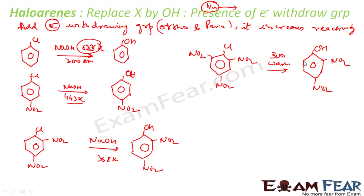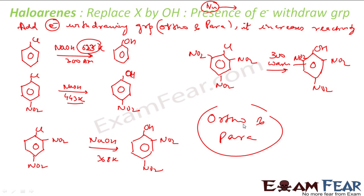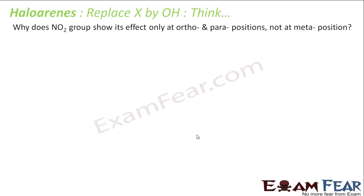Now you have seen that we added the nitro group only at ortho and para positions. As I told, the electron withdrawing group withdraws electrons, making the ring less electron rich so the nucleophile can attack. But the question is: why did we add only at ortho and para position, not at meta position? Think.